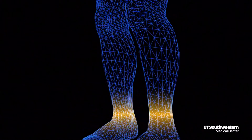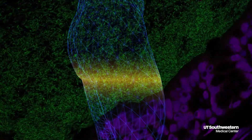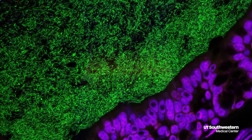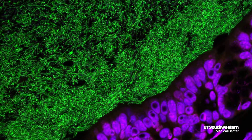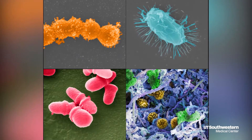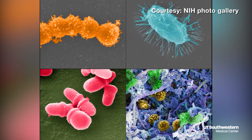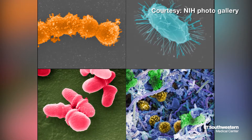The human body is inhabited by a number of different microbes. I'm talking about, in particular, the GI tract — the gastrointestinal tract — where there are trillions of microbes living there. They provide beneficial functions for the host, but they can also be associated with disease processes, for example, colorectal cancer and inflammatory bowel disease.